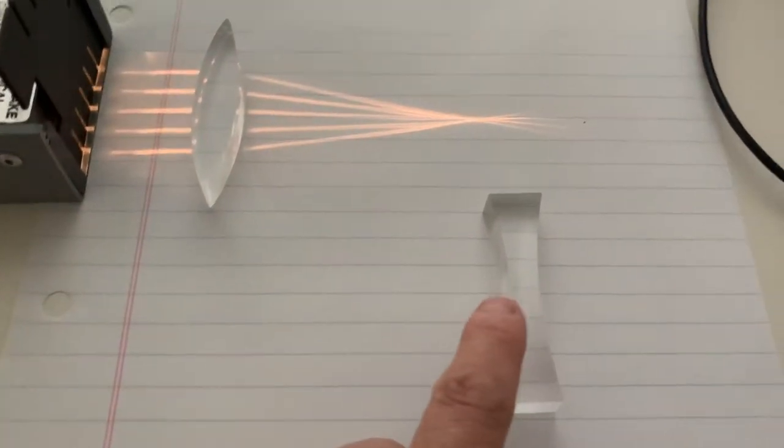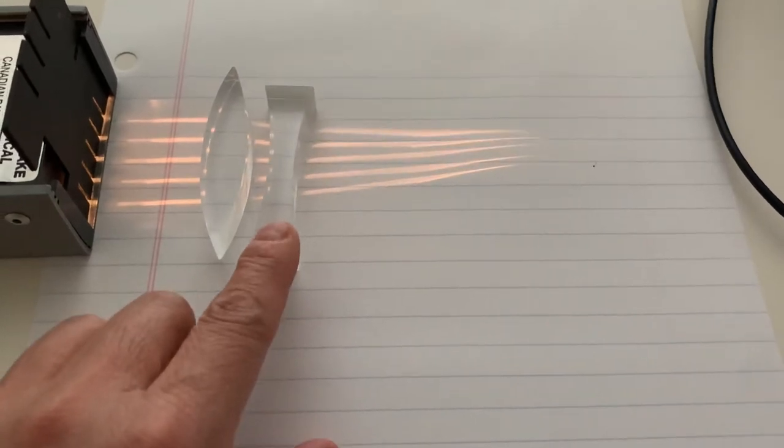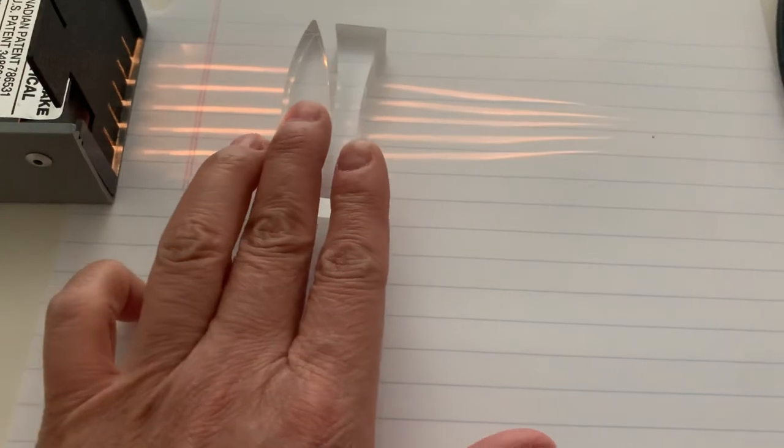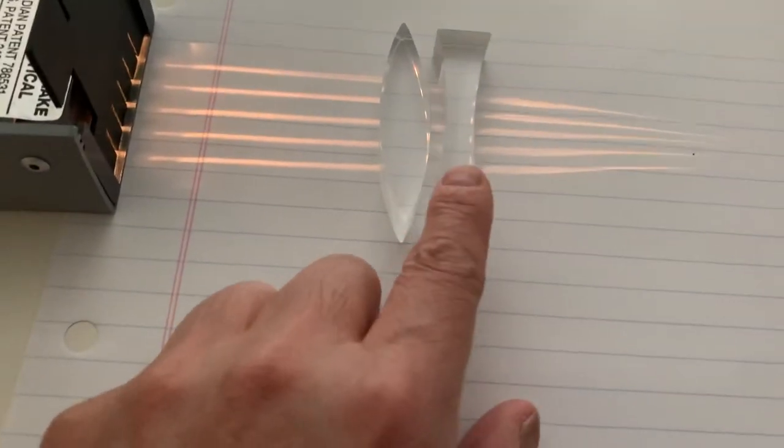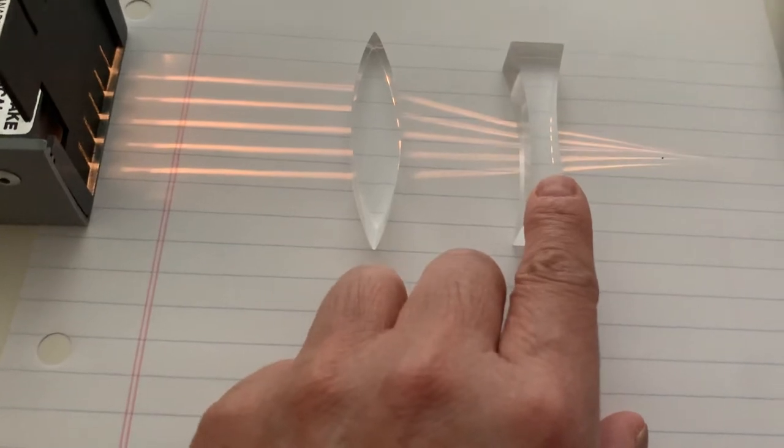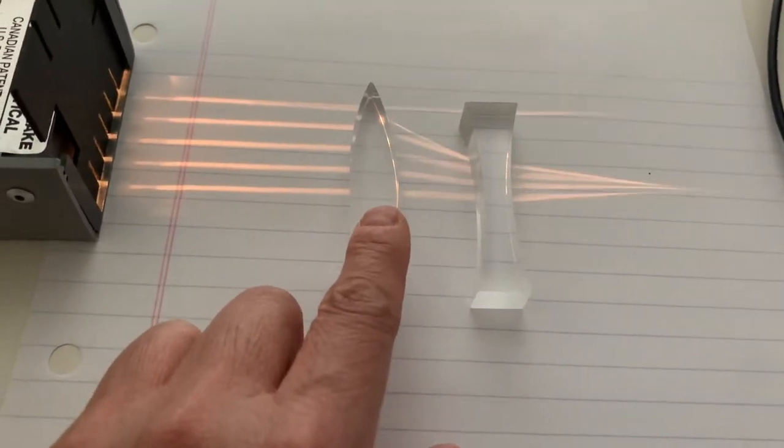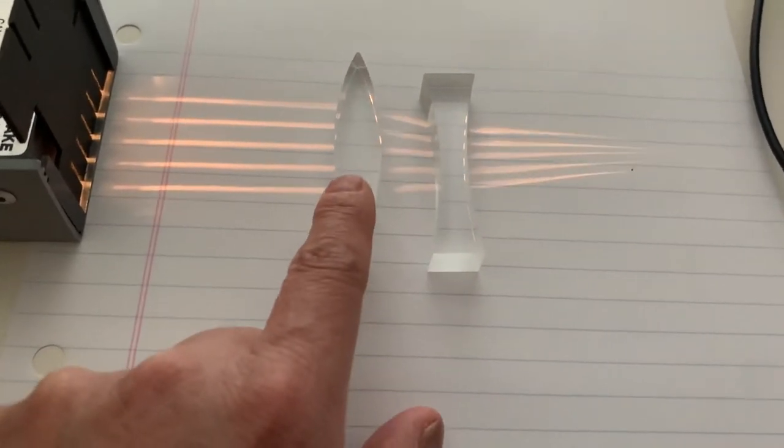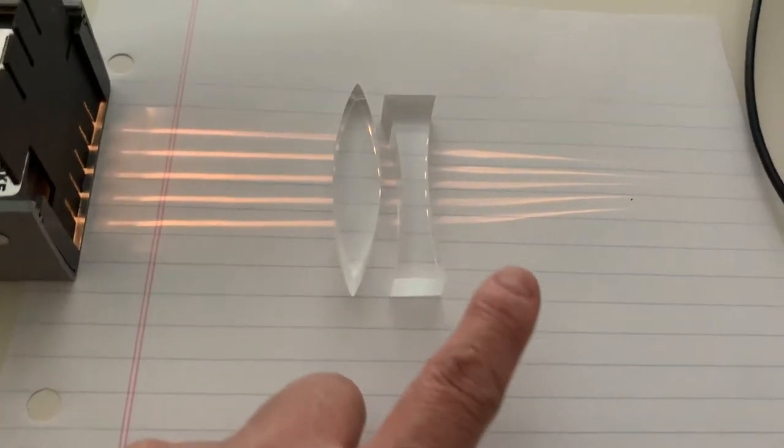That one makes the light converge. This one makes light diverge. Oh, can they cancel out? Can they possibly just sort of cancel out each other? Sort of neat. Maybe I can get it like sort of, sort of canceling out. Nice.